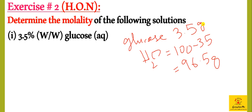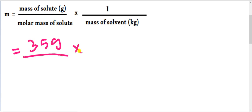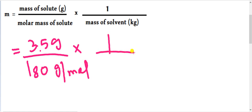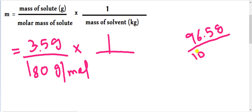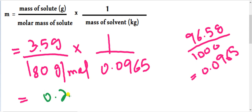Now we put the formula: mass of solute is 3.5 grams, molar mass of glucose is 180 grams per mole, mass of water is 96.5 grams divided by 1000, giving 0.0965 kg. The answer is 0.2 molal.